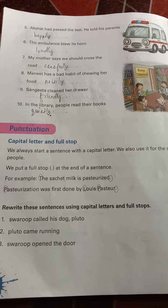Number four: 'The sun is shining ___' — the answer is 'brightly.' Moving to page 112, number five: 'Akshat had passed the test and told his parents ___' — the answer is 'happily.' Number six: 'The ambulance blew its horn ___' — 'loudly.' Number seven: 'My mother says we should cross the road ___' — 'carefully.' Number eight: 'Monty had a bad habit of eating food ___' — 'noisily.'